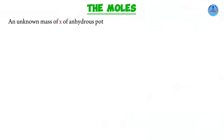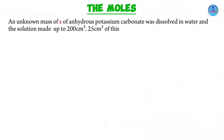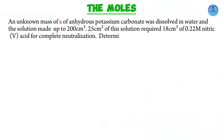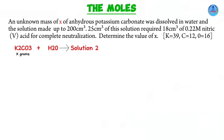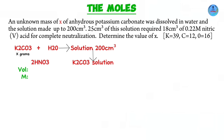On to our last question. An unknown mass X of anhydrous potassium carbonate was dissolved in water and the solution made up to 200 cubic centimeters. 25 cubic centimeters of this solution required 18 cubic centimeters of 0.22 M nitric acid for complete neutralization. Determine the value of X. We have relative atomic masses of potassium, carbon, and oxygen. Of the 200 cubic centimeters solution, only 25 cubic centimeters was used in reaction with the nitric acid, whose volume is 18 cc and molarity is 0.22 M.